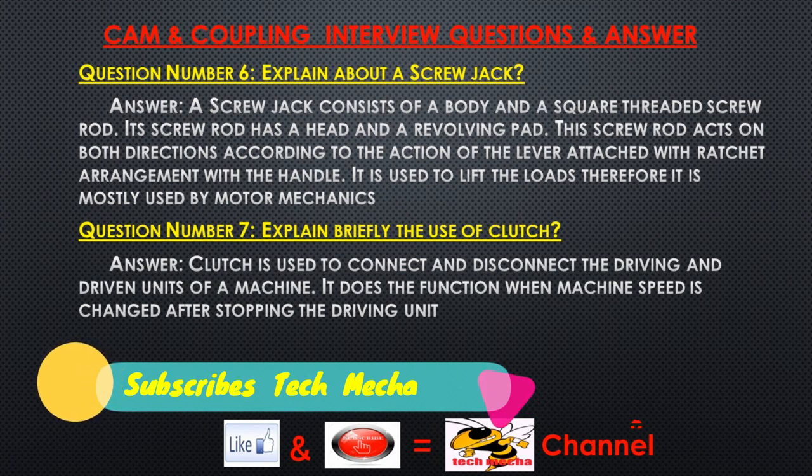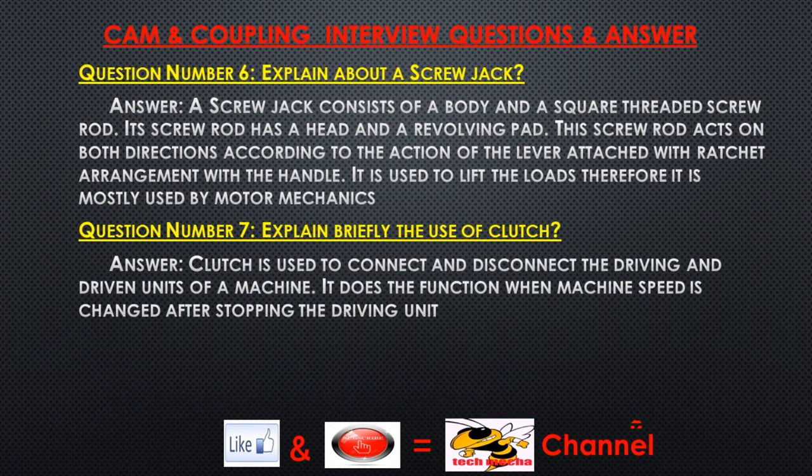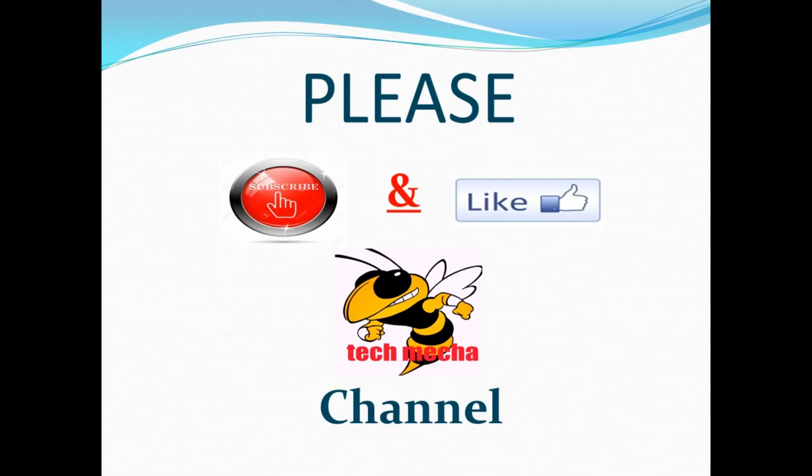Question number seven: Explain briefly the use of a clutch. Answer: A clutch is used to connect and disconnect the driving and driven units of a machine. It performs its function when machine speed is changed after stopping the driving unit.